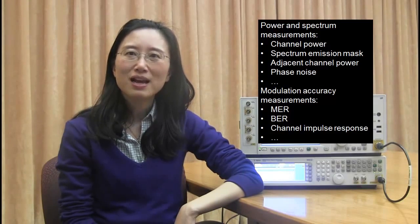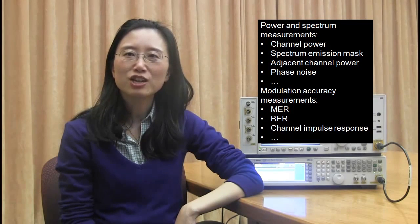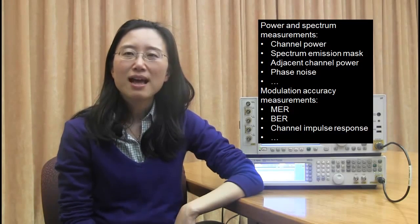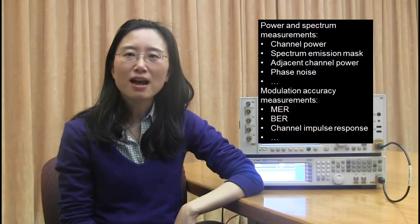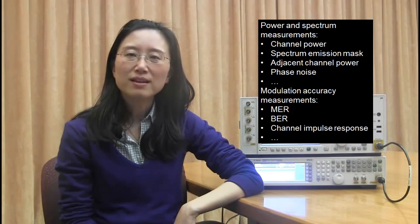The transmitter tests defined in the measurement guide can be divided into two groups. One is for power and spectrum measurements, such as channel power, spectrum emission mask, adjacent channel power, and phase noise. And the other is for modulation accuracy measurements, such as MER, BER, channel impulse response, and others.